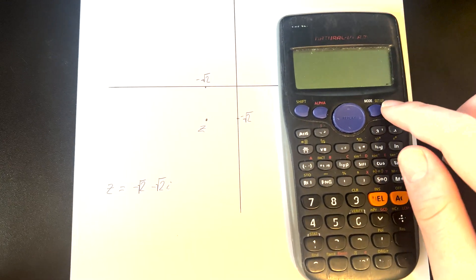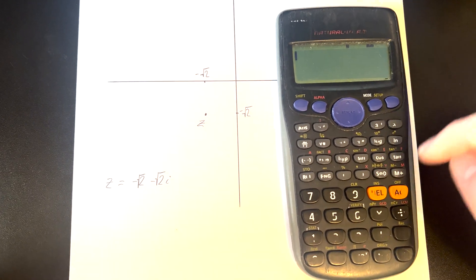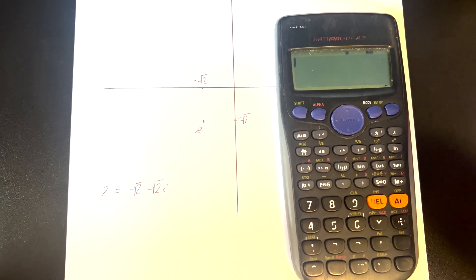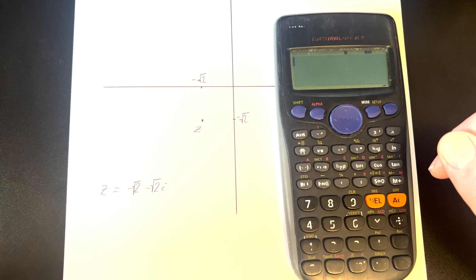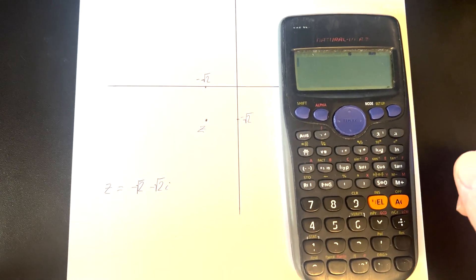I just wanted to make a quick video showcasing how we can go from rectilinear form into polar form using our calculator. For example, let's say we're given the point z. Now z is represented by minus root 2 minus root 2i.